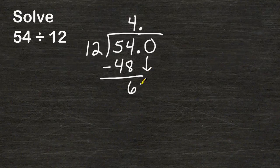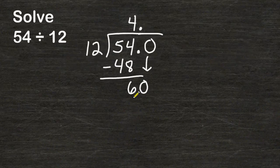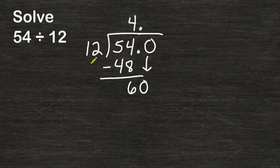And then you bring that zero which is now in the tenths place and drop that down and now you have the number 60. It is actually 6.0 but to keep it simple we are going to pretend it is 60.